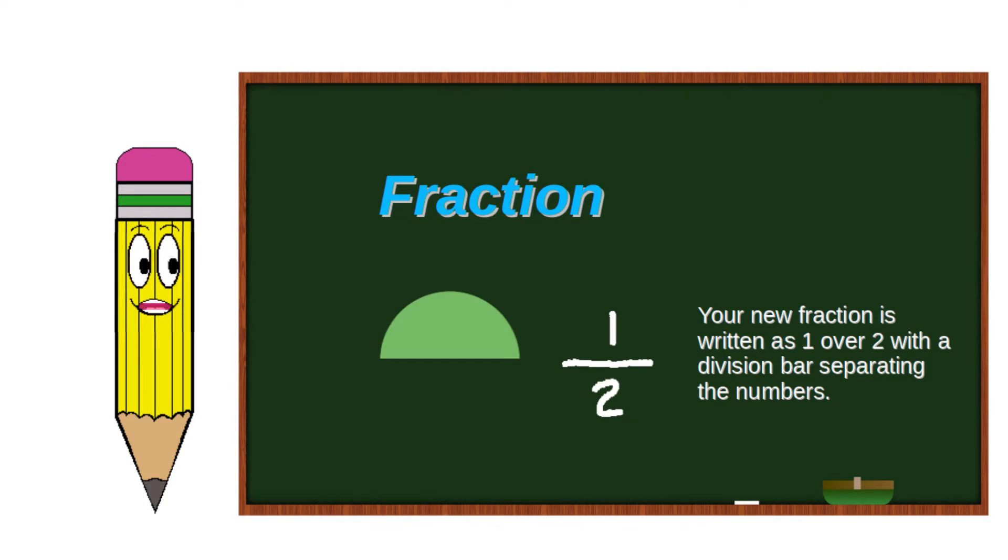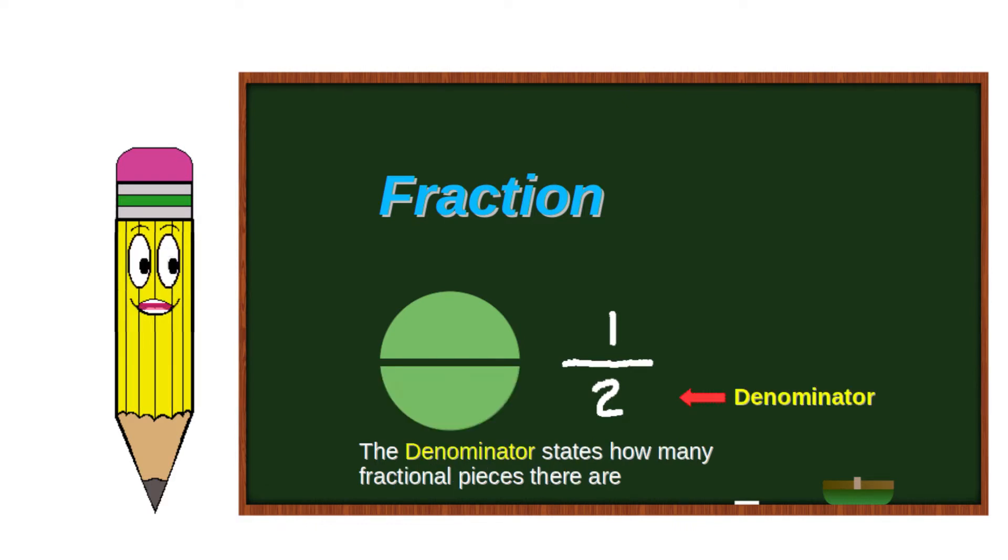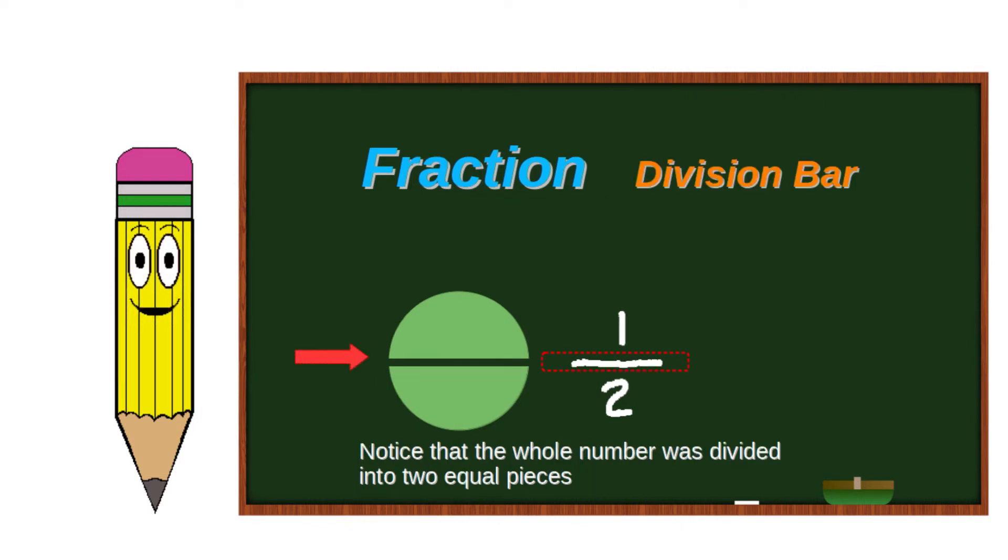Your new fraction is written as 1 over 2 with a division bar separating the numbers. The top number is called the numerator. The numerator states the quantity of equal fractions. The denominator states how many fractional pieces there are. Notice that the whole number was divided into two equal pieces.